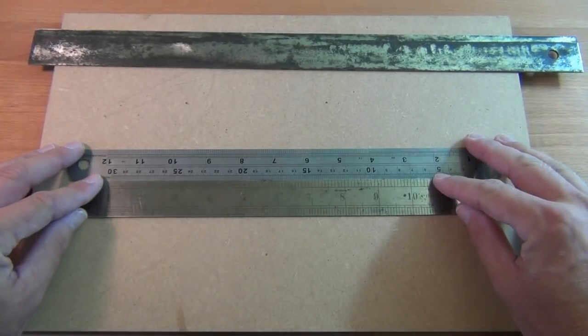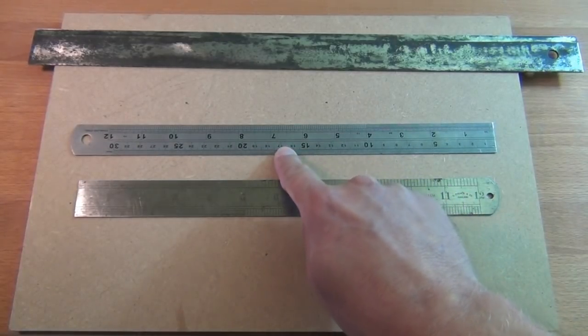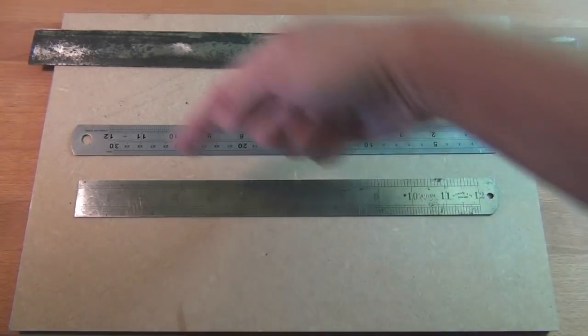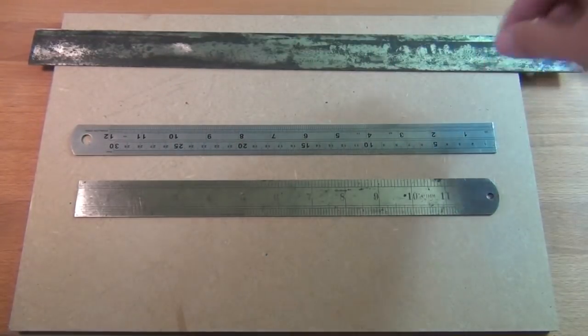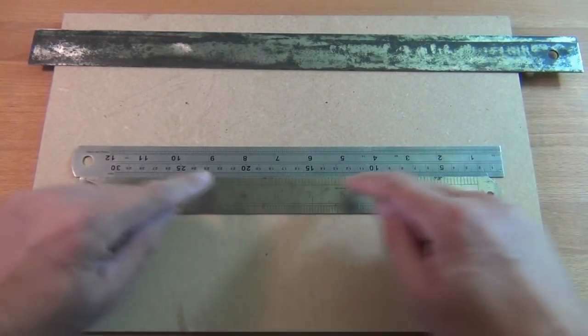But that's not a perfect check for it. Because if the top of this rule was bent like that, and the top of this rule was also bent like that, it would fit together and you'd see no gap in between them.